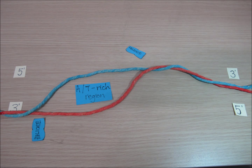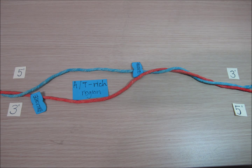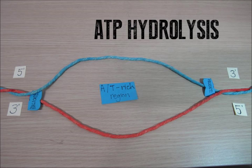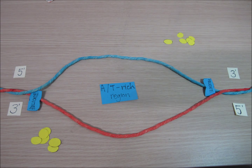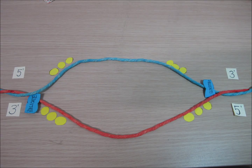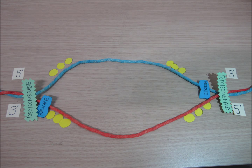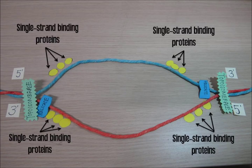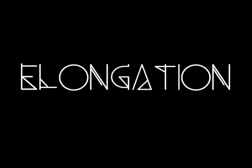Next, DnaC would assist the binding of DnaB helicase to the template. Helicase would cause breakage of the parental double helix — unwinding, basically. Breakage by helicase is done using ATP hydrolysis. There are also other proteins which help in the initiation step. The unwinding of DNA causes a significant amount of stress on the DNA; hence, topoisomerases are present to reduce this strain. Also present are the single-strand binding proteins. These proteins bind onto the DNA strands and stabilize them to keep the replication bubble open. Hence, with the replication bubble open, the elongation step can now be carried out.